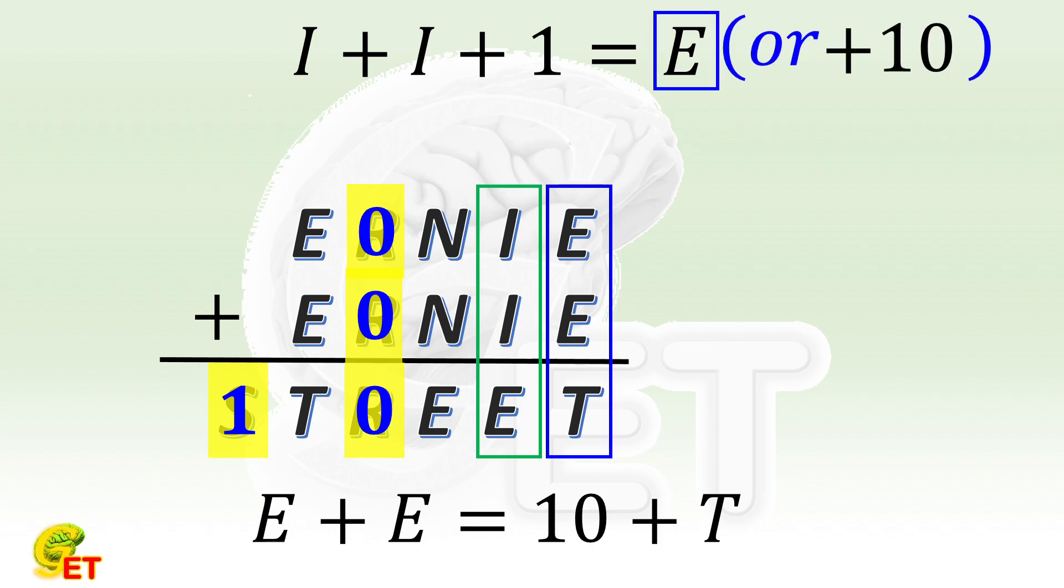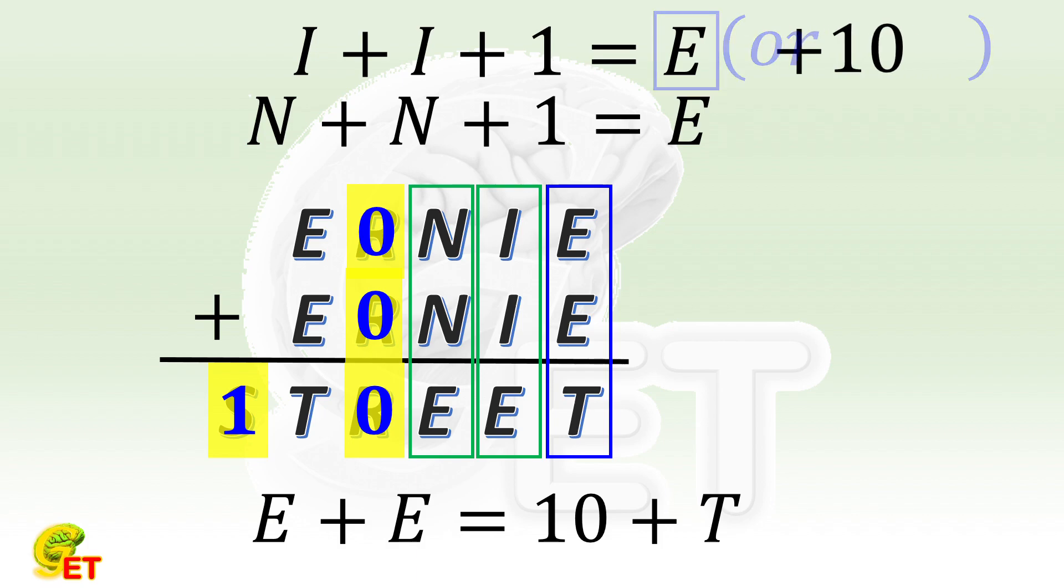One place ahead, the summation of 2N must be even, so there is also a carry over there. That is, I plus I plus 1 equals E plus 10.